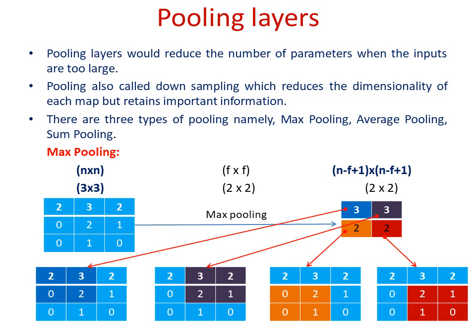The pooling layer, also called the down-sampling layer, reduces the amount of information gathered from the input image, which is very important when you have too many input parameters. Pooling layers have three types: max pooling, average pooling, and sum pooling. Among these, max pooling is predominantly used in convolutional neural networks. For an n×n input to the max pooling layer with an f×f filter, the output is (n − f + 1) × (n − f + 1). For example, with a 3×3 input and a 2×2 filter, the output is 2×2, since 3 − 2 + 1 = 2.